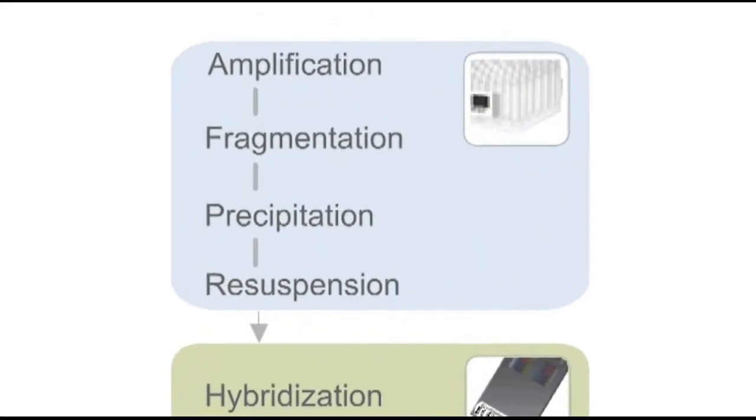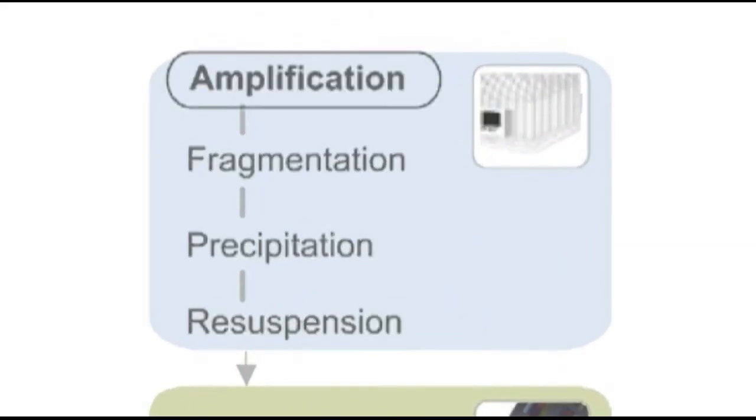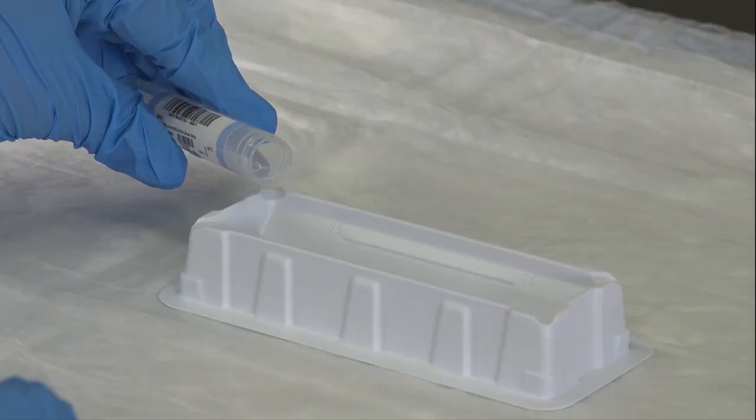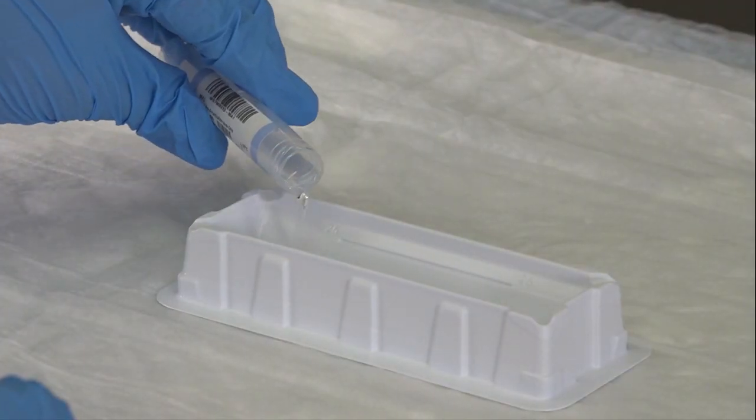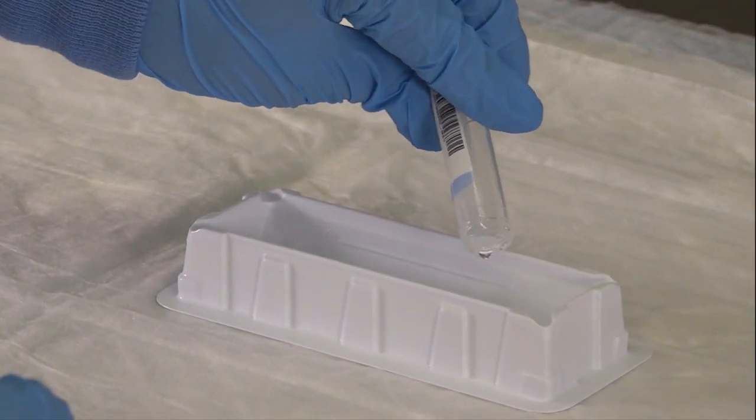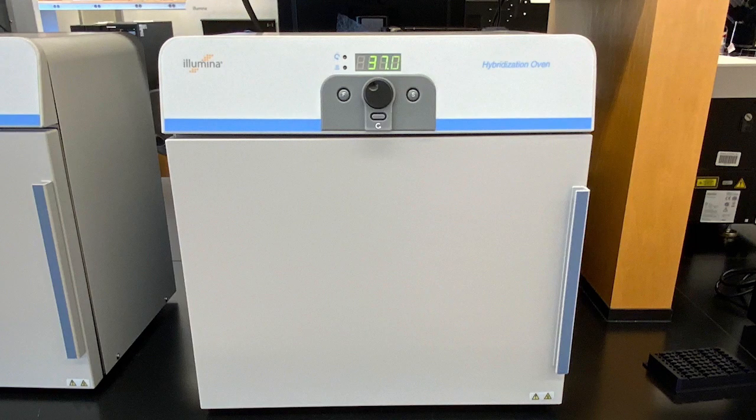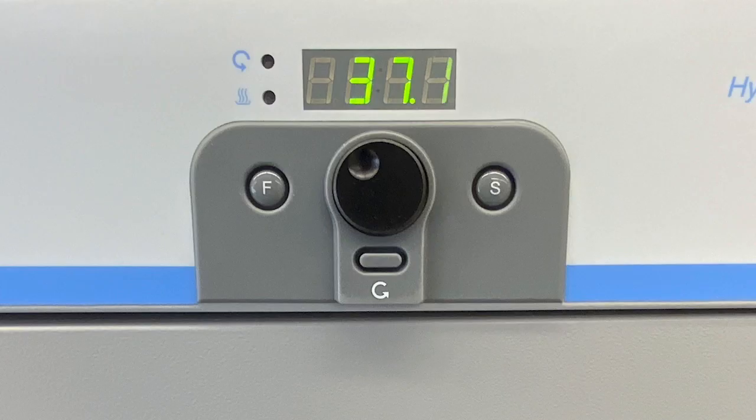The first step of the Infinium assay is amplification. Remove the amplification reagent from the freezer, allow to thaw, and pour into a disposable trough. Set the hybridization oven to 37 degrees Celsius.